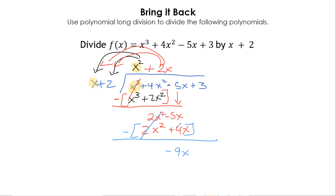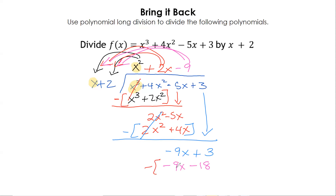Be really careful when you write out this subtraction because a lot of people mess up on that. Bring down the next term. What times x gives us negative 9x? That's negative 9. Negative 9 times everything on the outside gives me negative 9x minus 18. Change my sign, draw my line — be careful of your negatives. 3 minus negative 18 gives me 21. So the remainder is 21 over x plus 2.